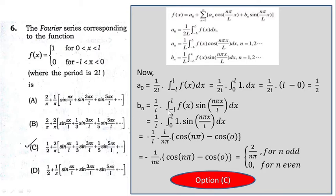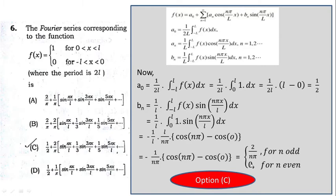For bₙ: integrate (1/L) from −L to L of f(x) sin(nπx/L) dx. Since f(x) = 0 from −L to 0, only the 0 to L part contributes. Integrating sin gives cos, leading to: bₙ = −(1/nπ)[cos(nπ) − cos(0)]. For even n, cos(nπ) = 1 and cos(0) = 1, so 1 − 1 = 0, meaning bₙ = 0 for even n.